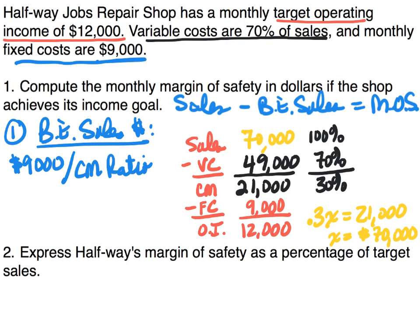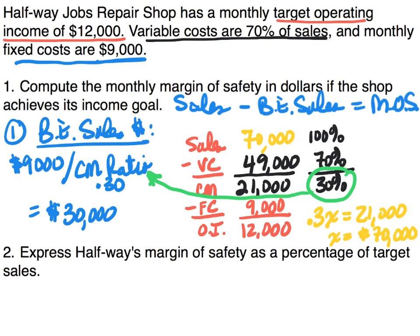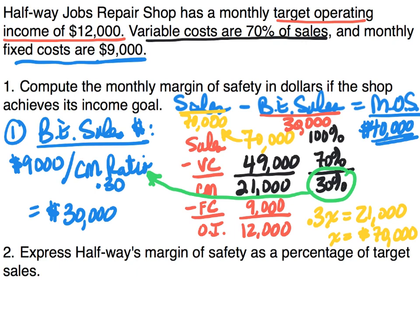Now we have our contribution margin ratio of 30%, which we use to calculate break-even in sales dollars. Fixed costs of $9,000 divided by 30% gives us break-even sales of $30,000. With sales of $70,000 and break-even sales of $30,000, our margin of safety is $70,000 minus $30,000, which equals $40,000. That's how we solve a margin of safety problem.